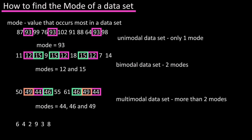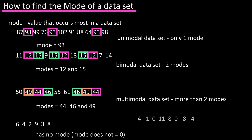In this data set, no value occurs more than once, so this data set is said to have no mode. You would not say the mode is zero, because here is a data set for winter temperatures, and the value that occurs the most is zero, so the mode of this data set is zero.